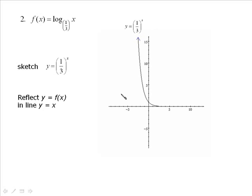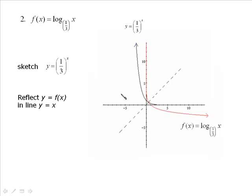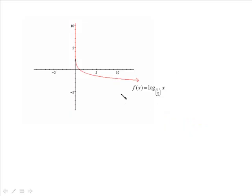If you were to reflect this graph in the line y equals x, it's not quite as easy as the increasing ones, but this is what we would get. Notice that if you tilted your head and compared the red and the black graphs, they are perfect mirror images over the y equals x line. And the graph in red is your logarithmic function.